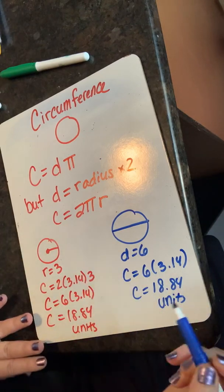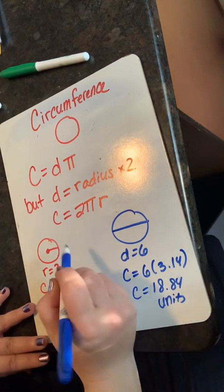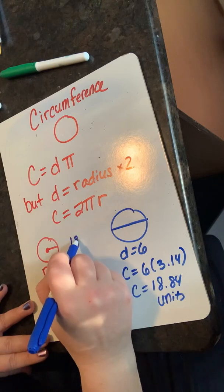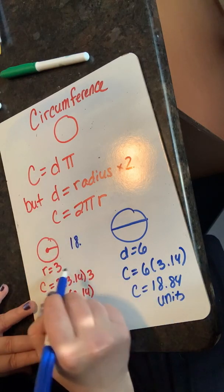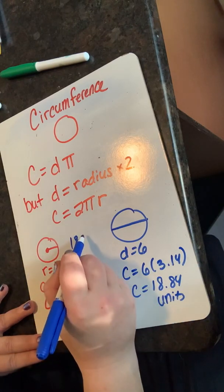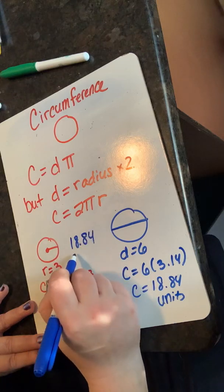And no matter what formula we use, I know the circumference of this circle with a radius of three, diameter of six, is 18.84 units.